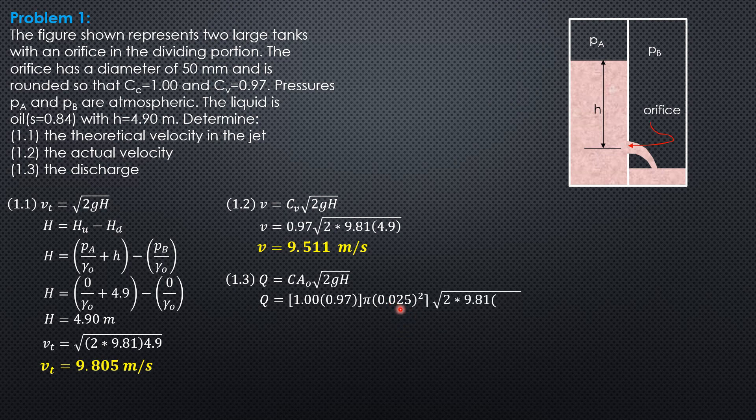the radius of the orifice is 25 mm or 0.025 meter. Then square root of 2 times 9.81 times 4.9 in cubic meters per second, the discharge is 0.01867 cubic meters per second.